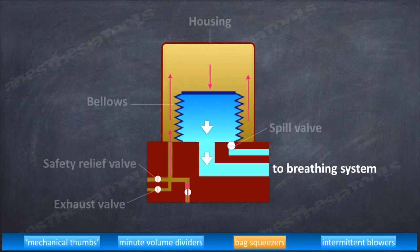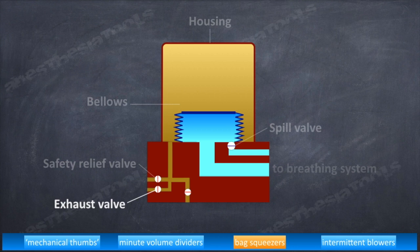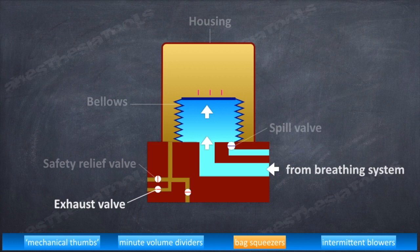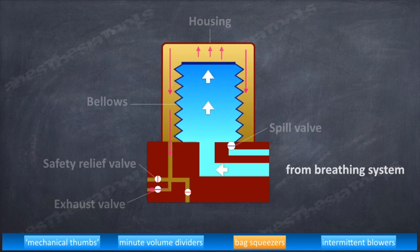We can regulate the parameters like tidal volume, respiratory rate in bag squeezer type of ventilators. Within respiratory rate, I:E ratio or inspiratory flow and inspiratory time can be set by the operator.